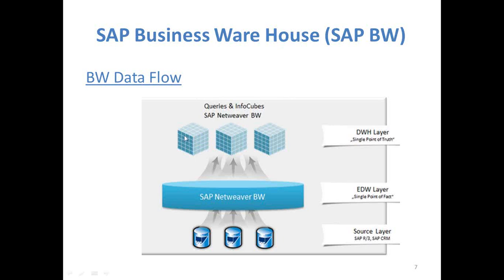Management might want to see sales, shipping, and billing all in a single report — you can merge all the cubes for that. Once you design your query, you publish it through a portal or a gadget, giving users a single link where all BW reports — sales, finance, HR — are available in one place. Only users with the proper authorization can execute specific reports, so you can restrict user access to particular data and particular reports.